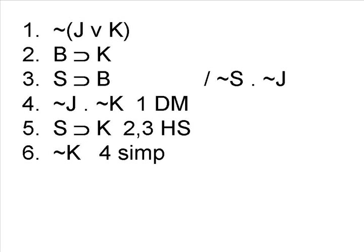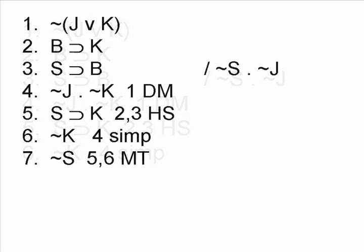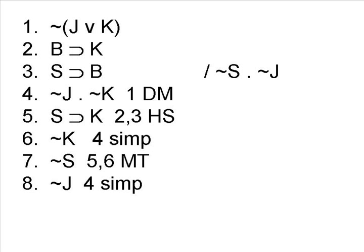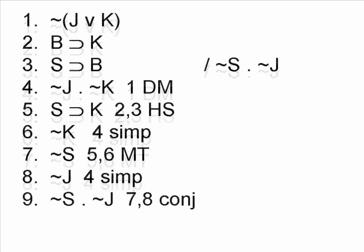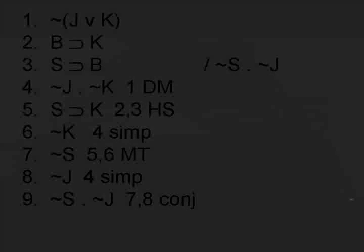It appears that we want the negation of K because this is going to work with line 5. We can derive the negation of S using modus tollens. Now, the conclusion itself is a conjunction, which very possibly means that it came from the Rule of Conjunction, provided we have not-S and not-J on lines by themselves. We have not-S. Now what we have to do is go back to line 4 and simplify the not-J. And from here, it's a simple process to put them together using the Rule of Conjunction, thus proving the argument valid.